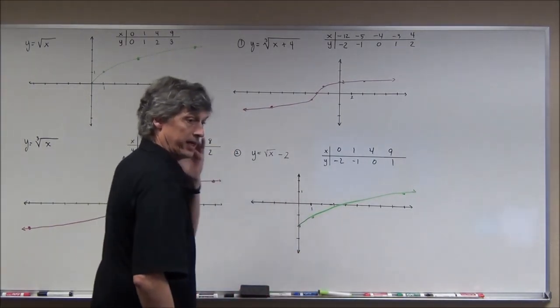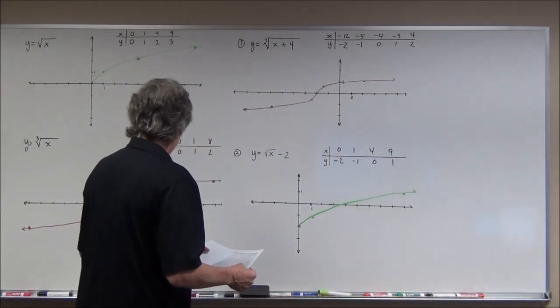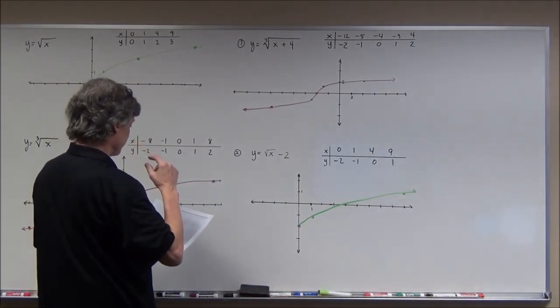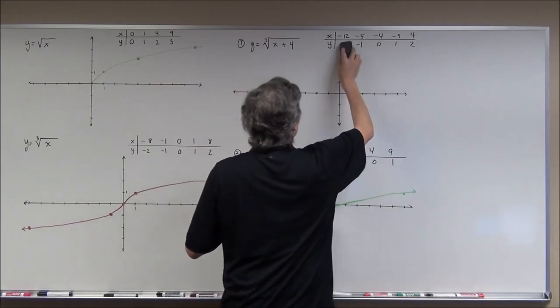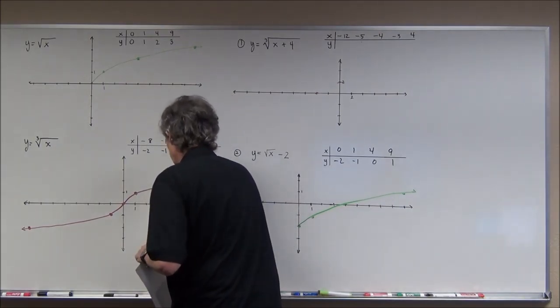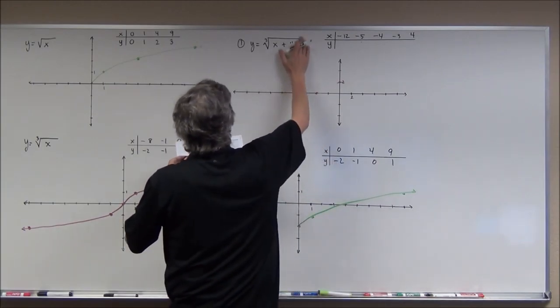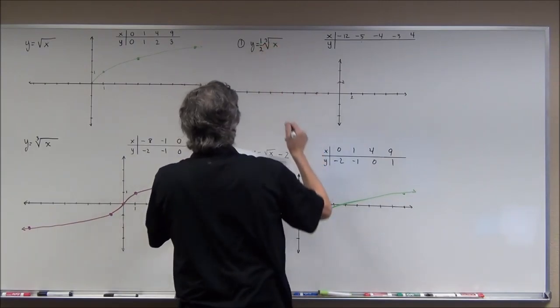The next one is Problem 3: y equals one half times the cube root of x. I need different x-values since I'm not adding anything inside. I'll pick the same values as the original cube root parent: negative 8, negative 1, 0, 1, and 8 because I can take the cube root of those numbers.